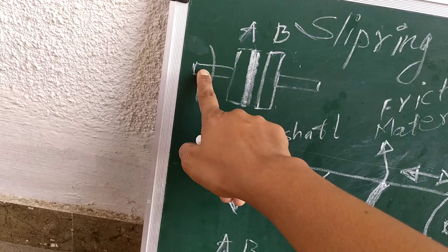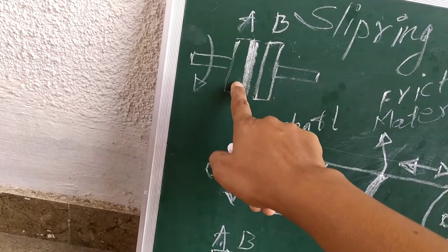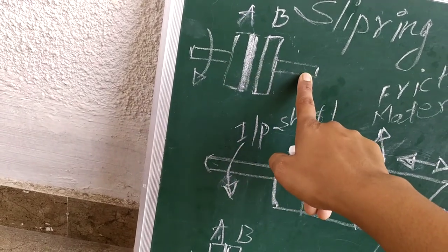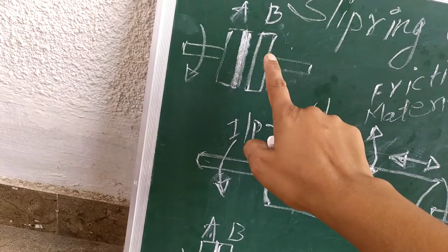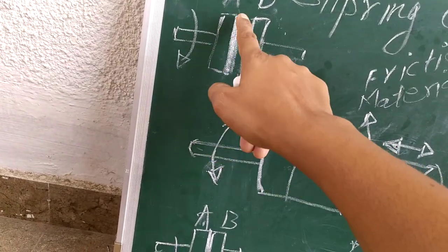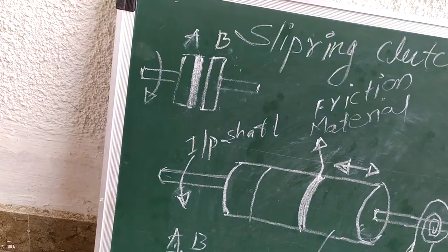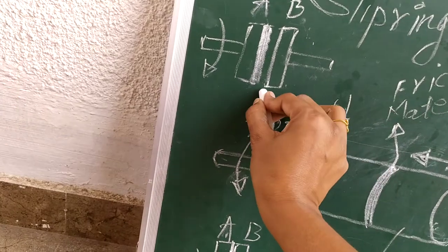Here is one shaft which is rotating at some RPM and it has a clutch plate named A. Another shaft is there which is at rest now and it has a plate B. To the A, there is a friction material - this dark portion is the friction material which is attached to it.